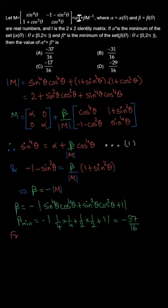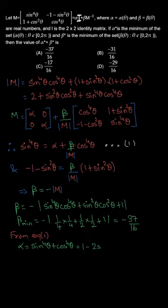For alpha, we use equation 1. Alpha equals sin⁴θ + cos⁴θ. Since beta was minus det(M), both cancel and minus cos⁴θ moves to the other side, giving sin⁴θ + cos⁴θ. This can be written as 1 minus 2·sin²θ·cos²θ.